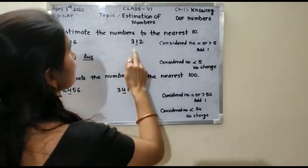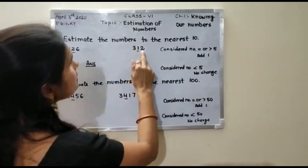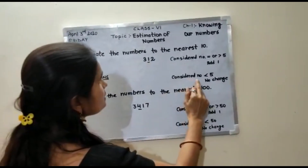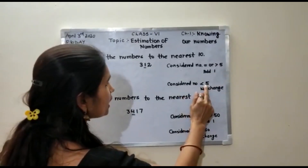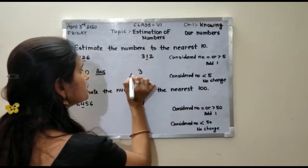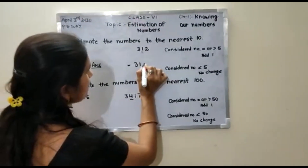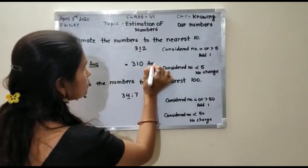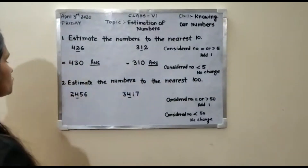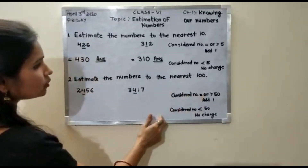In the next question, the tens place is 1 and your considered number is 2. Since 2 is less than 5, there will be no change. The first number will remain the same, 1 will remain 1, and the last digit will become 0.